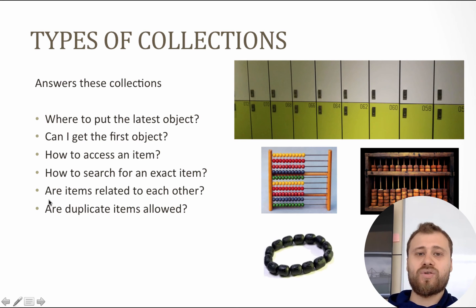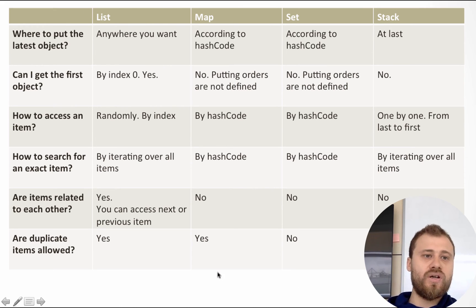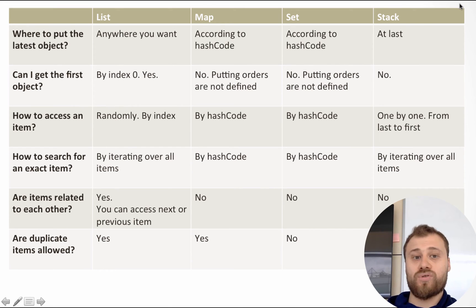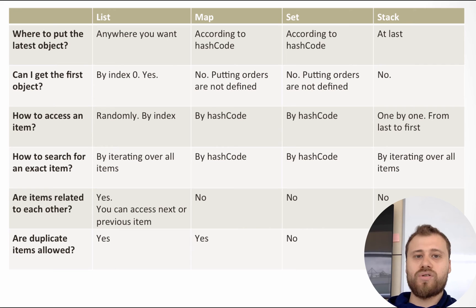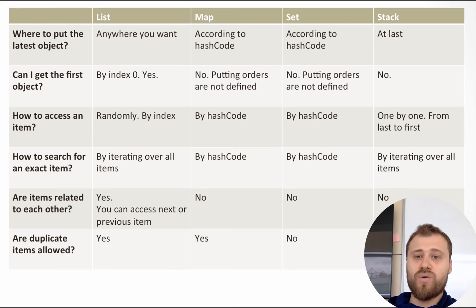These are the most common data structures inside Java, and they answer these questions with different answers — that's why we have different types of collections. The question 'where to put the latest object': List says anywhere you want, Map says according to the hash code, and Stack says at the topmost. The question 'can I get the first object': List says yes by index zero, Map says no it doesn't keep the insertion order. The question 'how to access an item': List says randomly by index, Map says by hash code, Set says by hash code, and Stack says no — you cannot access an item randomly, you should get all items one by one.